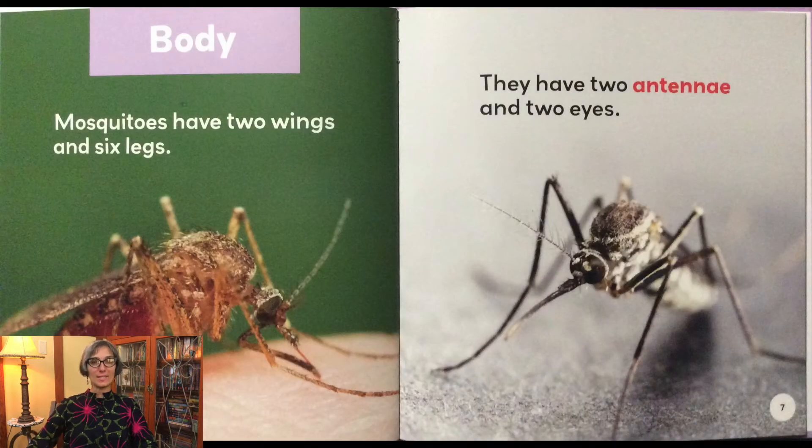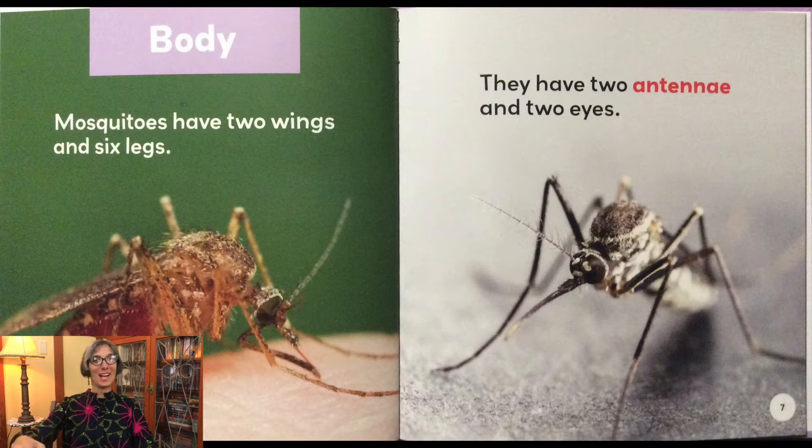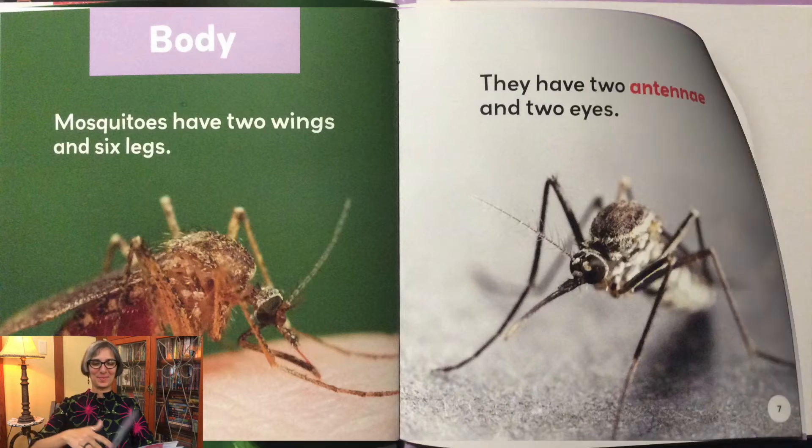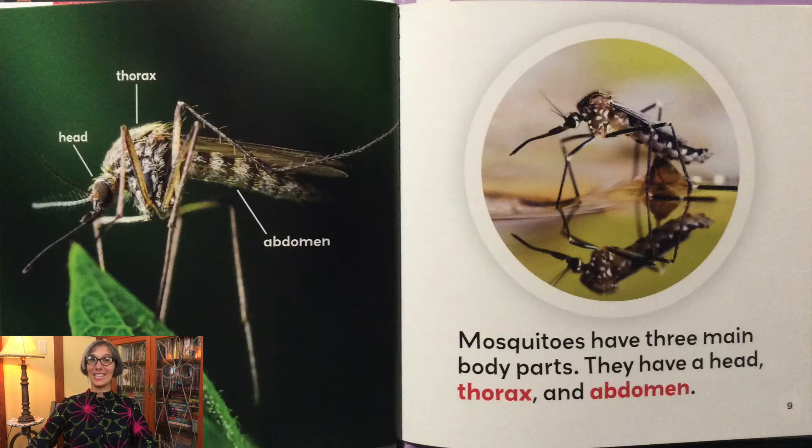Mosquitoes have two wings and six legs. They have two antennae and two eyes. All insects have three body parts: a head, a thorax, and an abdomen. Mosquitoes also have these three main body parts.